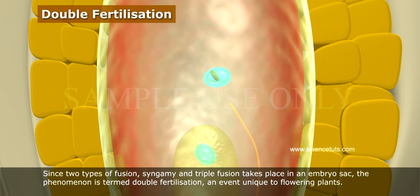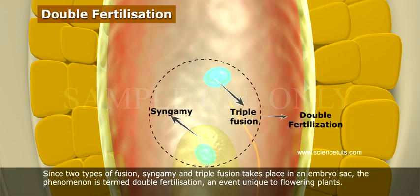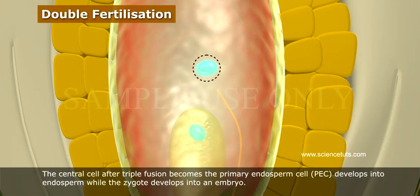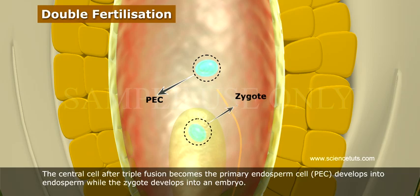Since two types of fusion — syngamy and triple fusion — take place in an embryo sac, the phenomenon is termed double fertilization, an event unique to flowering plants. The central cell after triple fusion becomes the primary endosperm cell (PEC), which develops into endosperm, while the zygote develops into an embryo.